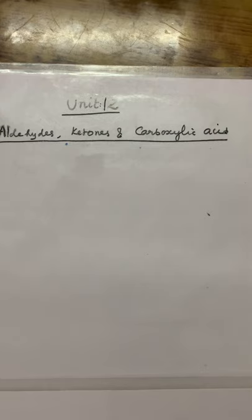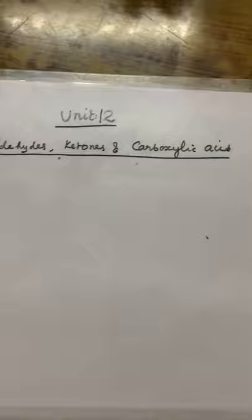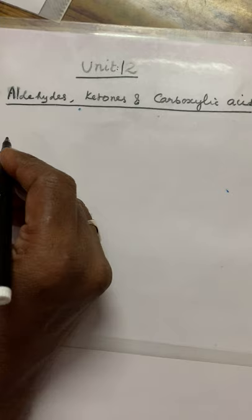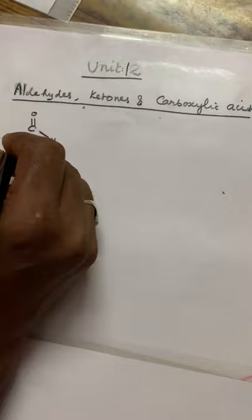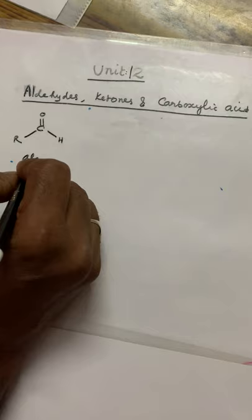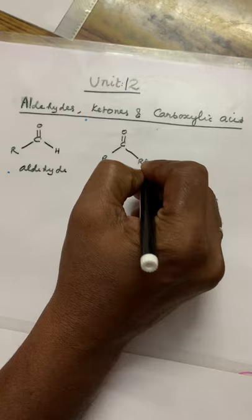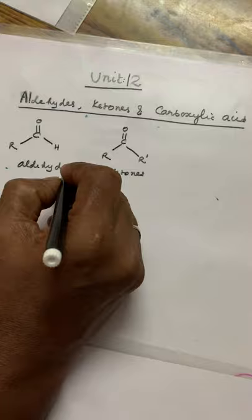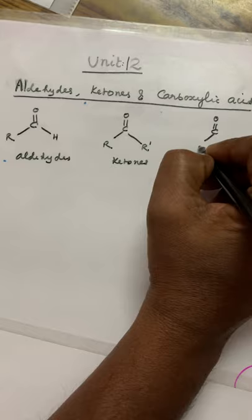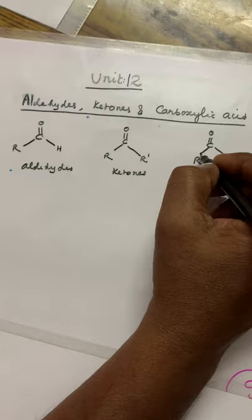This is unit 12. First of all, you take aldehyde, ketone, carboxylic acid. The carbonyl group which is attached with hydrogen and alkyl group — this is called aldehyde. The carbonyl group which is attached to two alkyl groups — that is ketone. The carbonyl group which is attached to OH as well as alkyl group — this is called carboxylic acid.